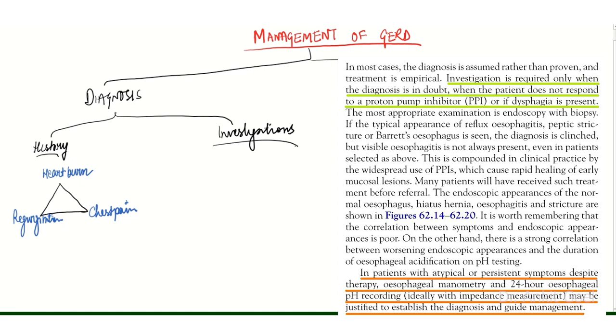Other investigations like manometry and pH monitoring are required only when the patient is having atypical or persistent symptoms despite initial medical treatment. Besides, investigations should be done in patients considered for anti-reflux surgery. The PPI should be stopped one week before the 24-hour pH test.